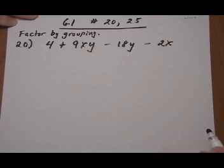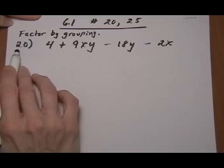Section 6.1, numbers 20 and 25 from the homework. Factor by grouping, number 20.